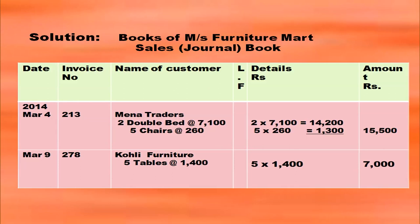Date is written with year first, then month, then date. Write the invoice number from the question. Name of the customer is Mina Traders. Two double beds at Rs. 7,100 each: 2 × 7,100 = 14,200. Five chairs at Rs. 260 each: 5 × 260 = 1,300. The net amount in the amount column is 14,200 + 1,300 = 15,500.